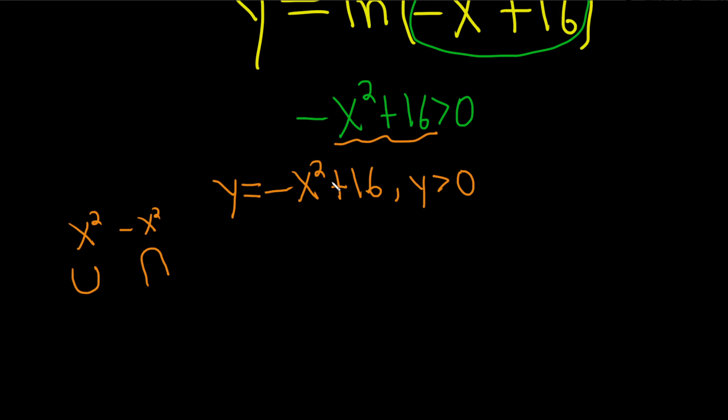And then when you add 16, you basically get an upside down parabola that's been shifted up by 16. So this is the graph of negative x squared plus 16.